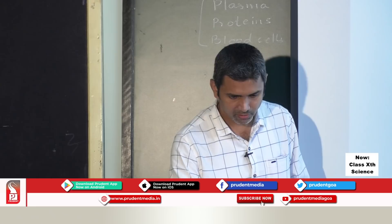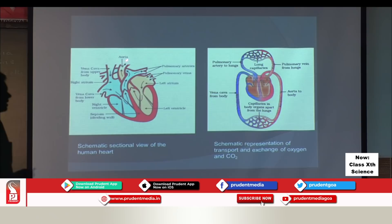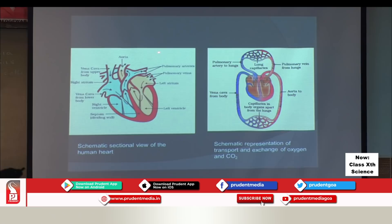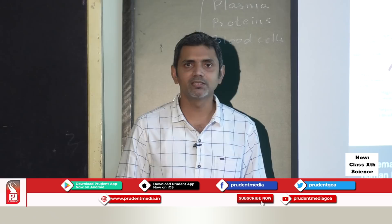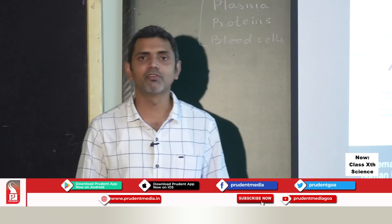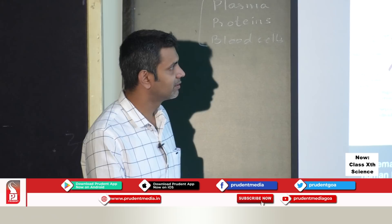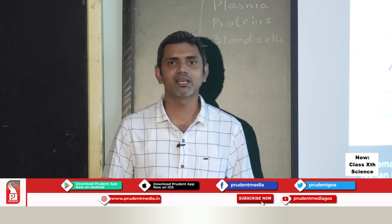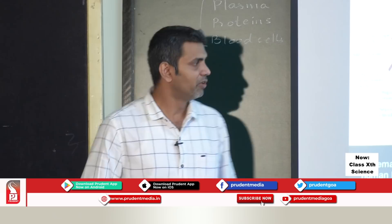Arteries carry blood from the heart to different parts of the body. Aorta is an example of an artery. Veins carry blood from different parts of the body back to the heart. Arteries have thick elastic walls because blood emerges from the heart at high pressure and arteries must withstand that pressure.